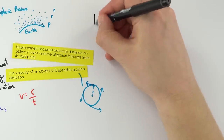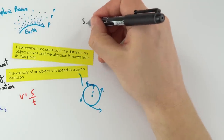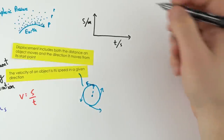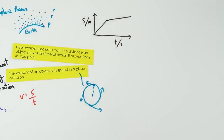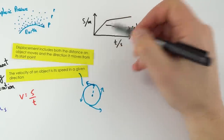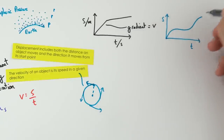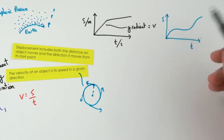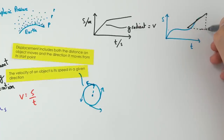It's really useful to draw graphs representing a moving object. On a distance-time graph, distance in metres is on the y-axis and time in seconds on the x-axis. The gradient of the line equals speed. If the line is curved, you draw a tangent at the point of interest and calculate the gradient from the change in y over change in x to find the speed at that point.